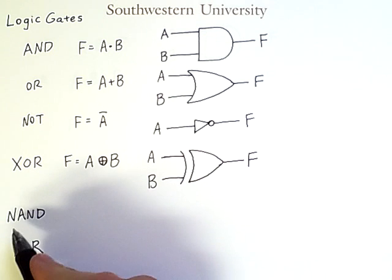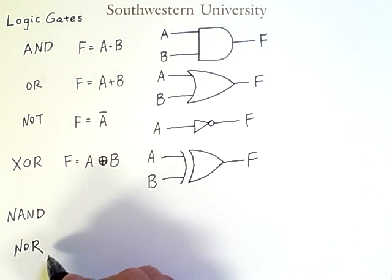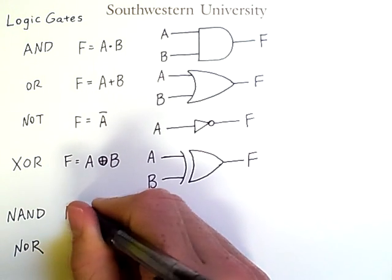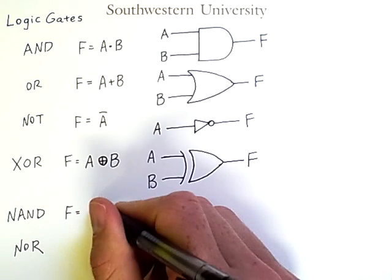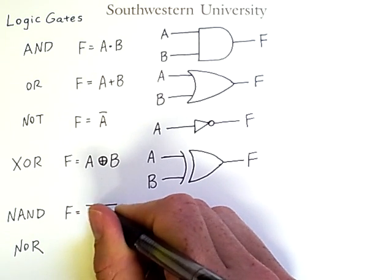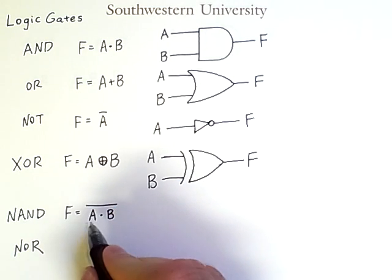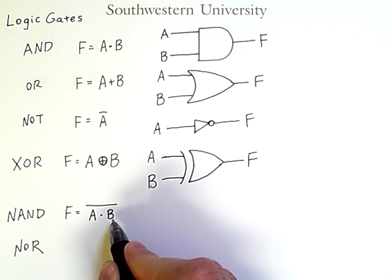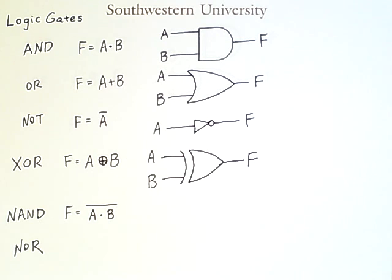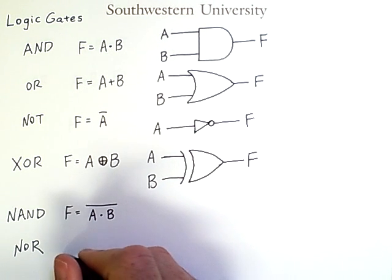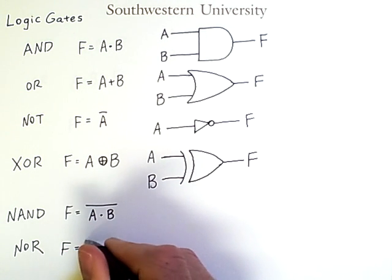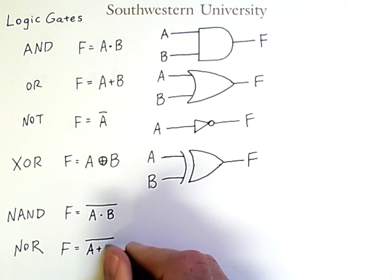So NAND stands for NOT AND, and NOR stands for NOT OR. It's simply the negation of the corresponding operation. So NAND is the negation of A and B, whereas NOR is the negation of A or B.